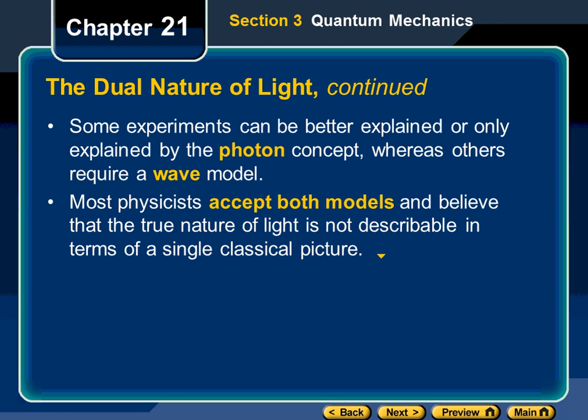We believe the true nature of light is not describable in terms of a single classical picture. Both ideas come together. We early on artificially separated everything — said things must be either a particle or a wave, that they're mutually exclusive. That was a wrong concept. We've now discovered those are not mutually exclusive ideas.